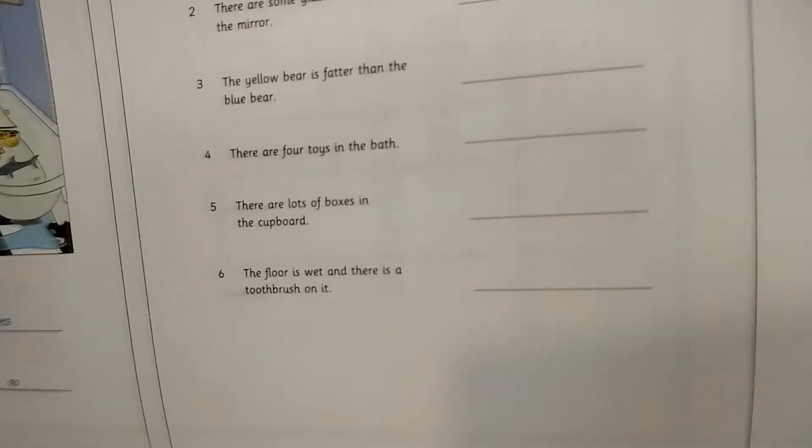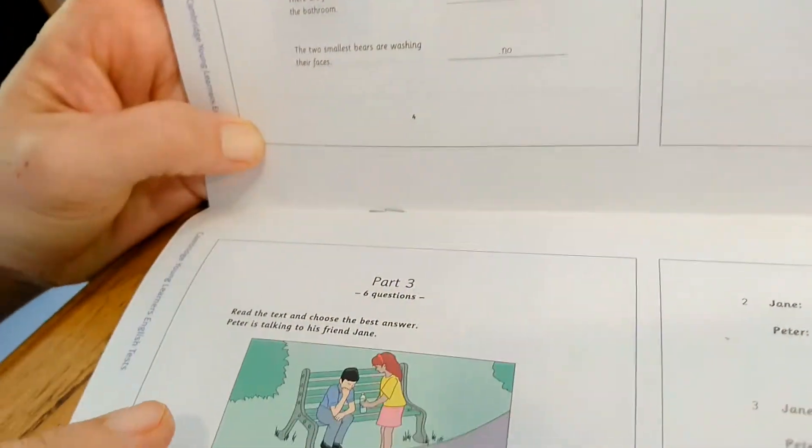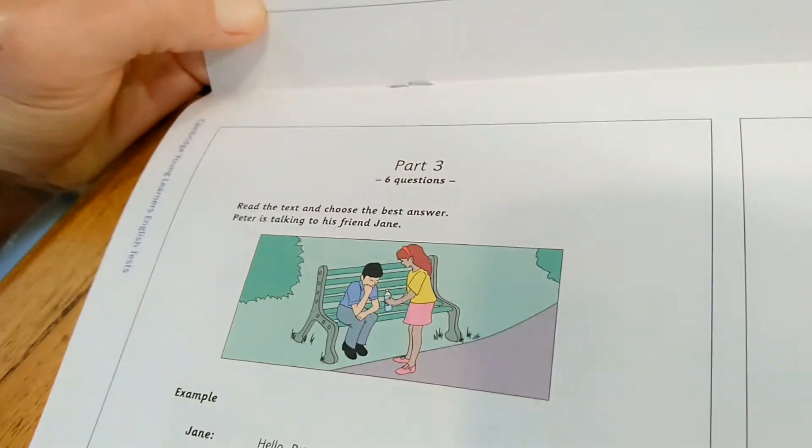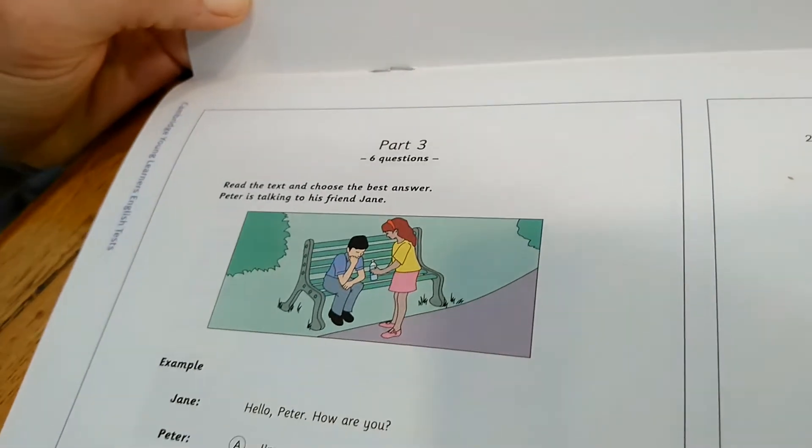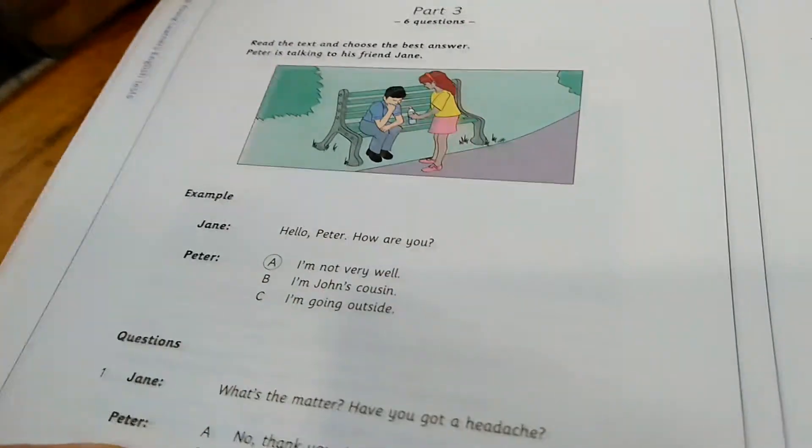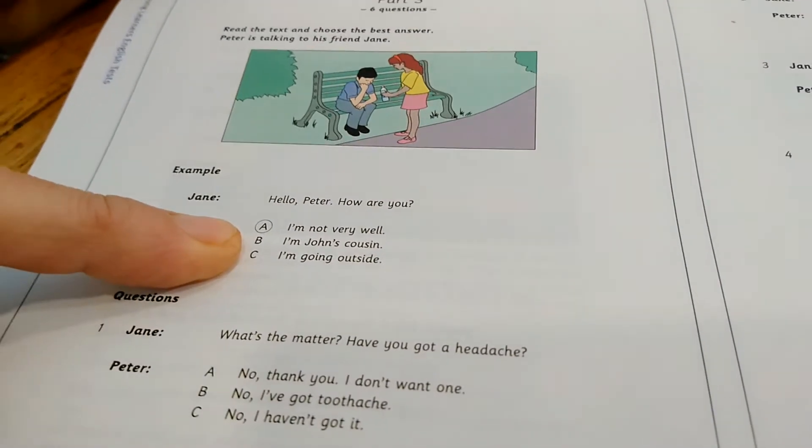Part three. You're going to read the text and choose the best answer. You have multiple choice. A, B, or C. Only one is okay.